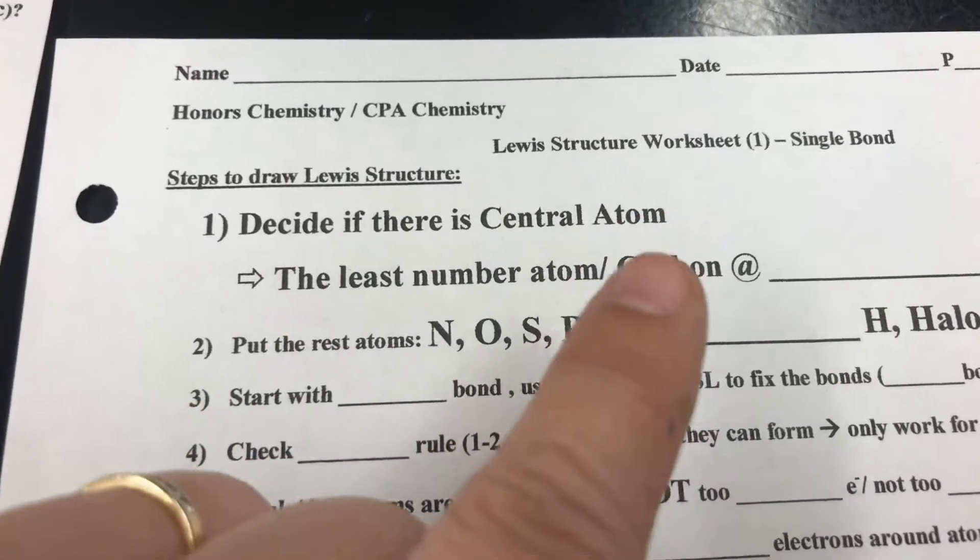Since we only have two atoms, we just put F and F — no choice. Step three: start with single bond. For this worksheet, you can check bonds right away: one bond in the picture, one bond in the NASL — red check. Check the HONC rule: F is halogen, which is H, so it can only form one bond maximum. This F has one bond, and this F also has one bond — it follows the HONC rule.